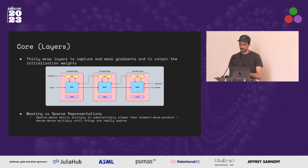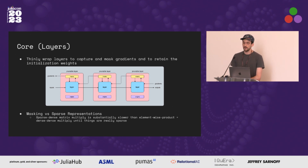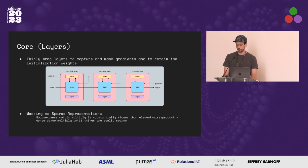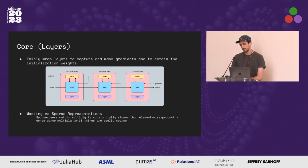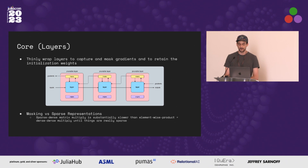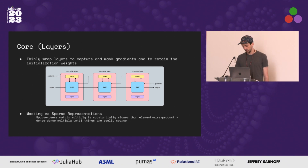One may ask why we use masking versus sparse representations. There are two reasons. First, until you get extremely sparse, masking with dense matrix multiplication is orders of magnitude faster than sparse matrix multiplication. Second, when doing gradient or weight updates, you can very easily accidentally broadcast an add or similar operation to a sparse matrix, and suddenly the whole thing becomes dense and your training time goes up by 500x. That's why we do it this way.